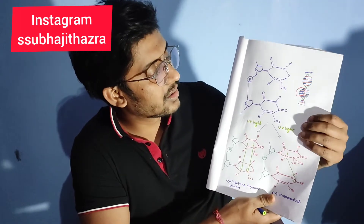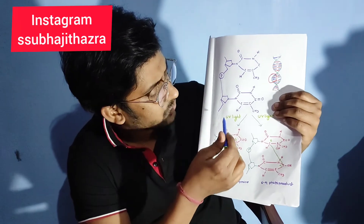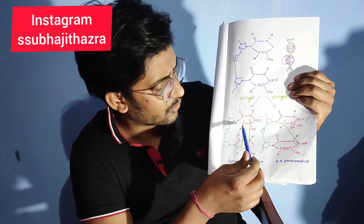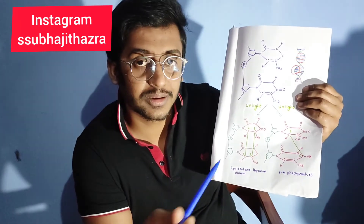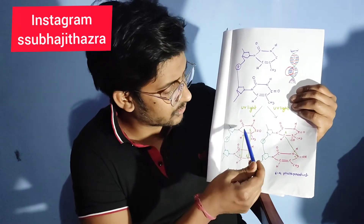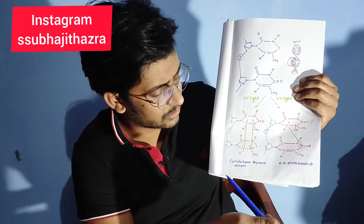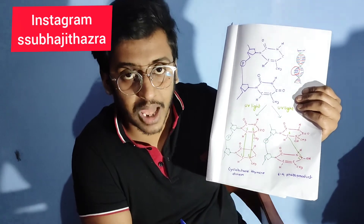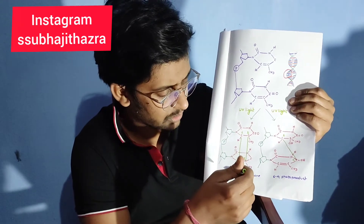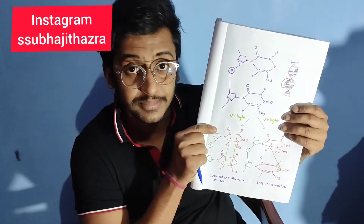So this nitrogen base becomes unable to hydrogen bond with the opposite base, that is adenine or guanine. This is the normal structure of thymine. In presence of UV light, a covalent bond forms — one pyrimidine dimer covalently attaches to another pyrimidine dimer, and as you can see, two covalent bonds are formed. This is called cyclobutane thymine dimer.